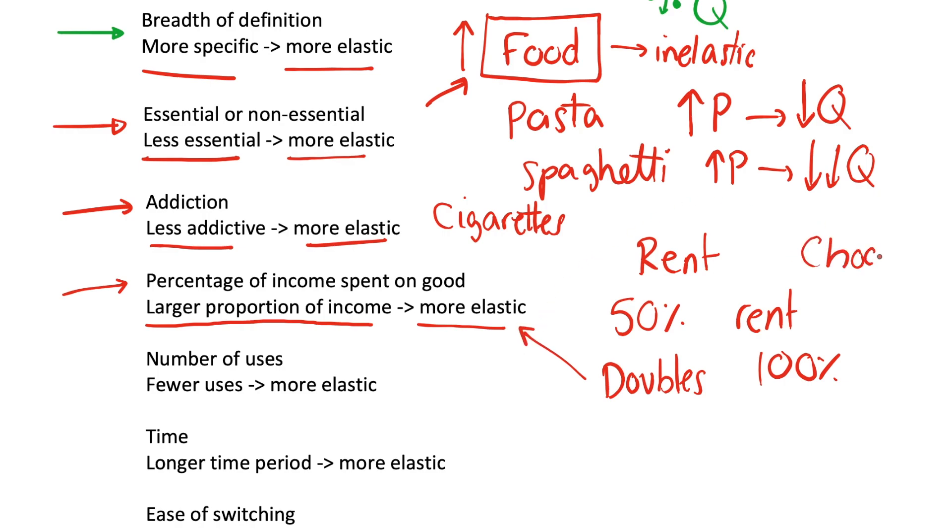However, if we think of a chocolate bar, if that costs £1 in a shop and the price of that doubles to £2, well, it's not going to be a massive issue. If you're really wanting a chocolate bar on that day, you're probably still going to be willing to pay £2 for it instead of the £1 that it was before, and that's because this is a much smaller proportion of your income. You can afford to pay that double the price because it's not really costing you that much anyway.